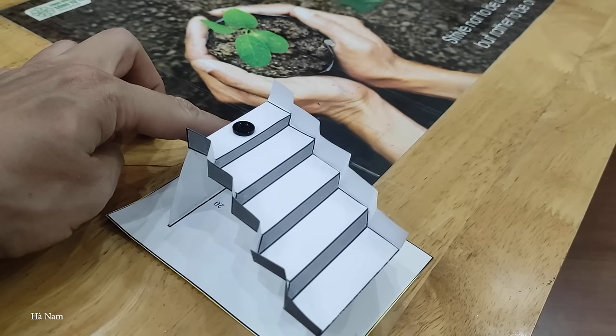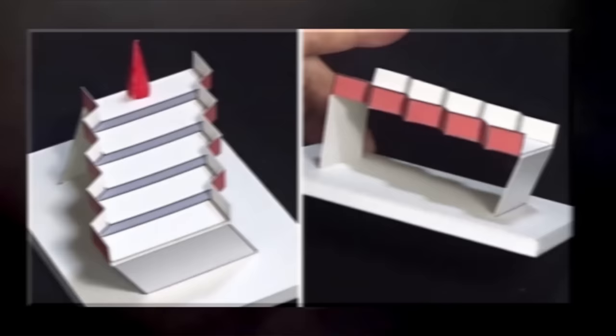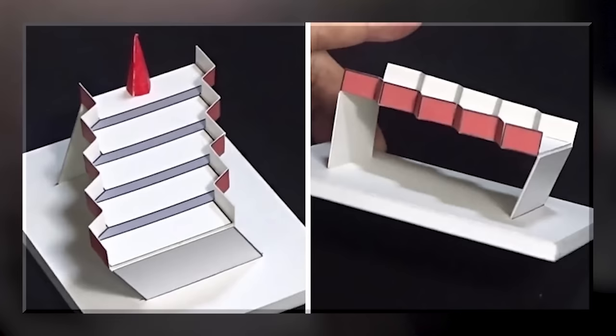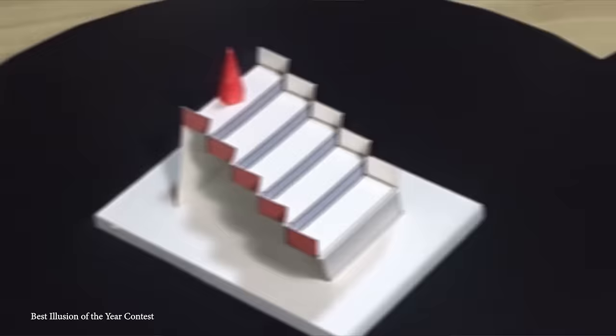The truth is ultimately revealed, though, when the staircase is turned onto its side. It actually is a completely level structure, and it's the way that the steps have been printed onto it and the position of the camera that gives the illusion that there's a difference in the height of either end.